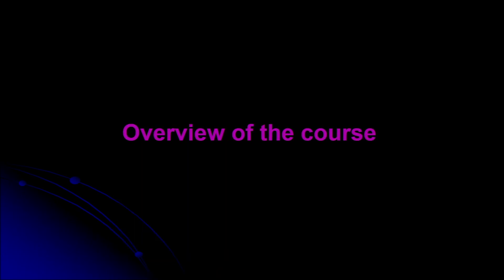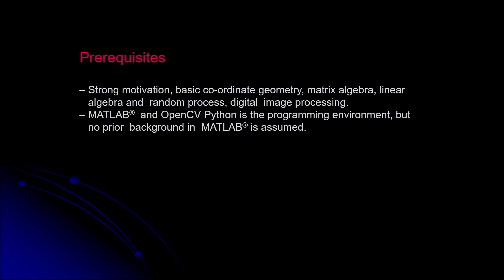The proposed course is a combination of three courses: mainly image processing, computer vision, and machine learning — with machine learning algorithms used in computer vision applications. The prerequisites include basic coordinate geometry, matrix algebra, linear algebra, random process, and digital image processing. For programming we can consider MATLAB or OpenCV with Python.